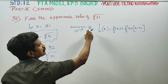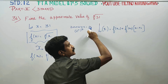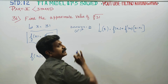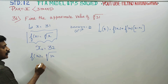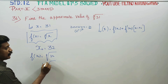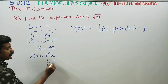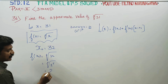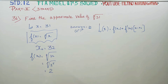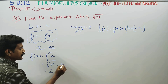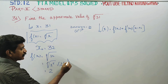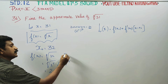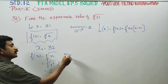If you have 33, you can choose 32 as x₀. If you have 34, you can also choose 32. The 5th root of 32 can be written as 2 power 5, whole power 1 by 5, which gives 2 power 1, equal to 2.